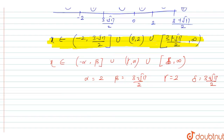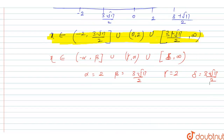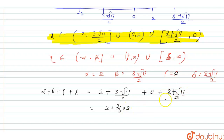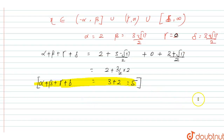In the first option, we find α + β + γ + δ. Substituting the values: 2 + (3-√17)/2 + 0 + (3+√17)/2 = 2 + 3 = 5. So α + β + γ + δ = 5, and option A is correct.